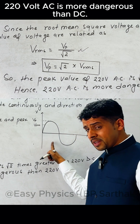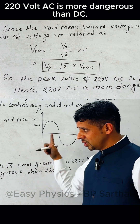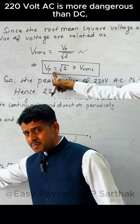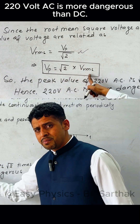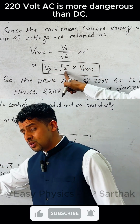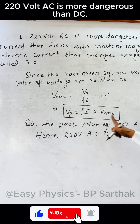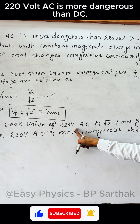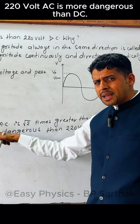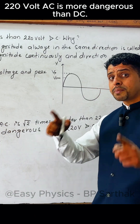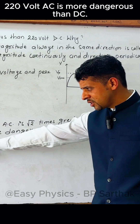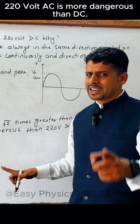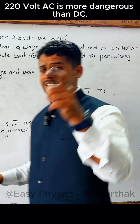I will show you the figure. The peak value is √2 times Vrms. So the peak value of AC is √2 times greater than that of DC. That's why we say 220 volt AC is more dangerous than DC.